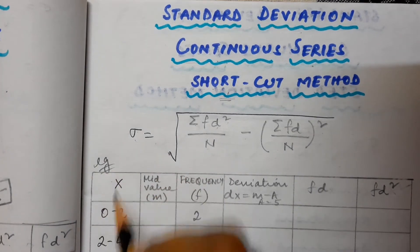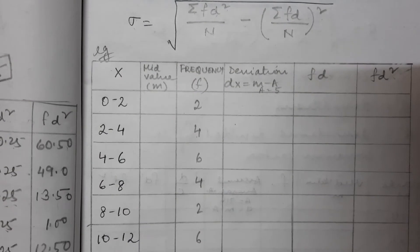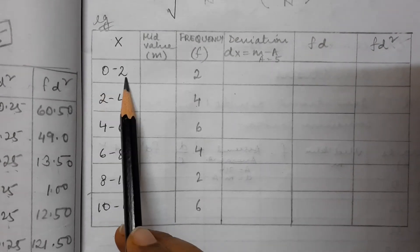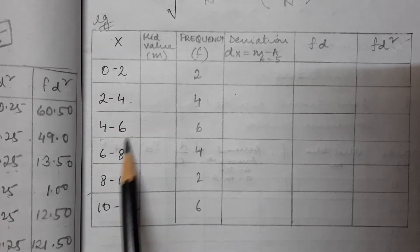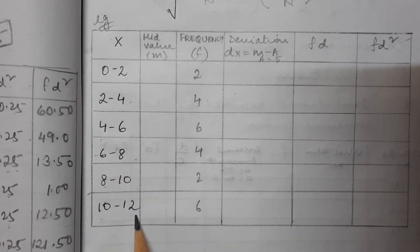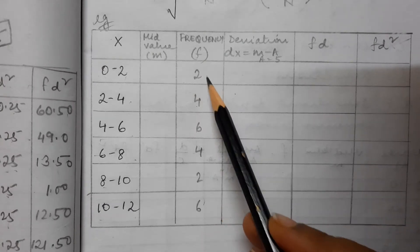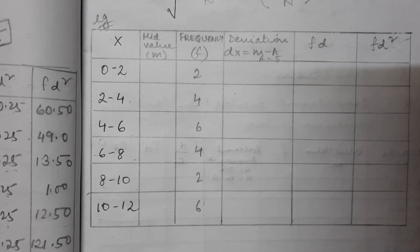Let us take an example and see how we will do it. You have been given a continuous series with class intervals: 0–2, 2–4, 4–6, 6–8, 8–10, and 10–12, with respective frequencies 2, 4, 6, 4, 2, and 6.